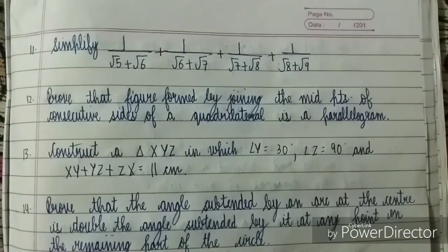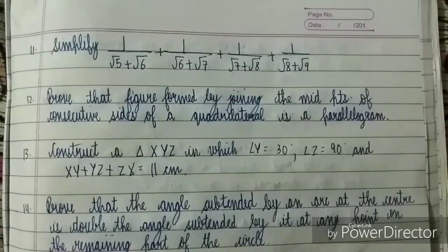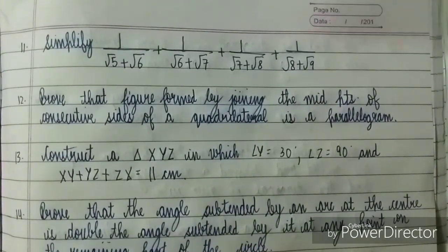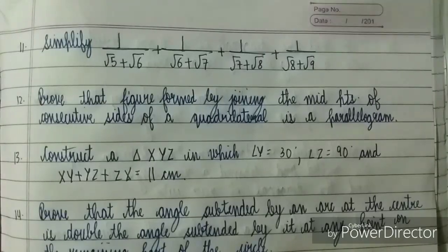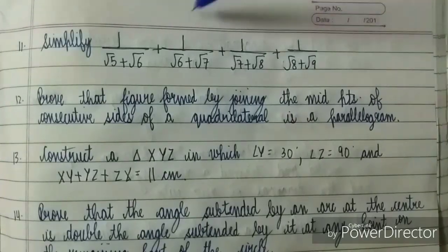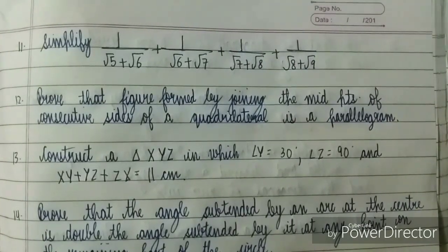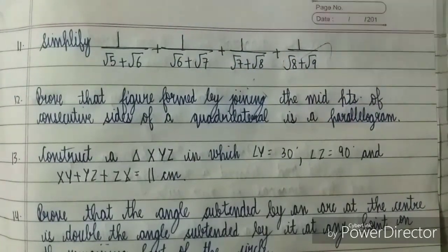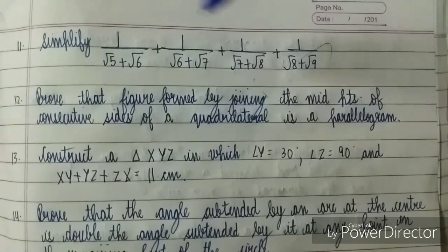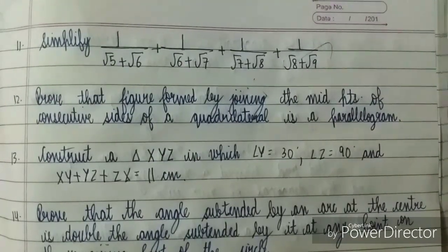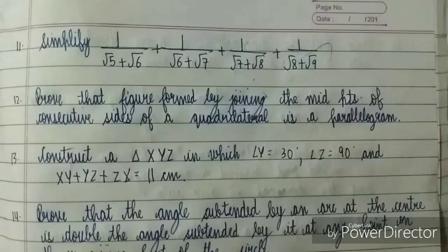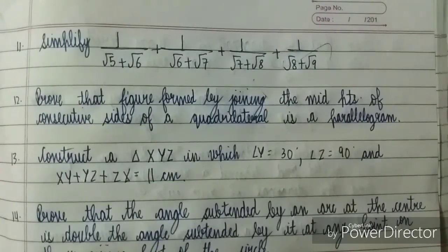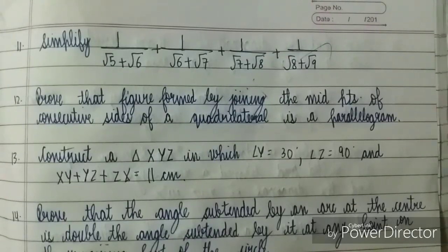So these are the most common questions which you should definitely prepare. Now let's start with the first question. This is question number 11: simplify this particular thing. See, I have just given it as an example. The denominator can definitely be changed - it can be a simple one, it can be like this only.